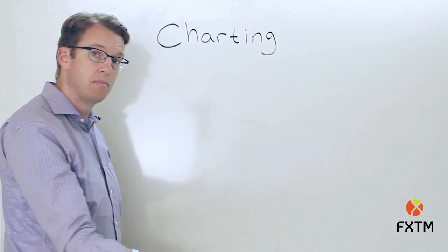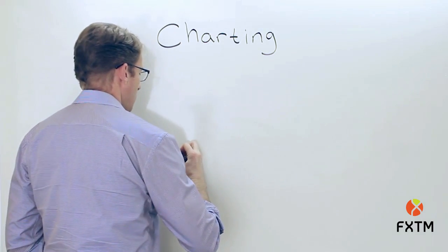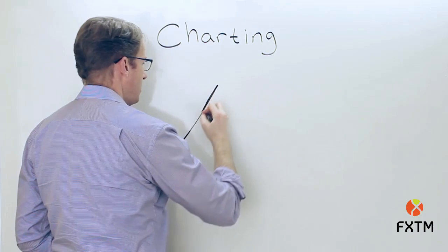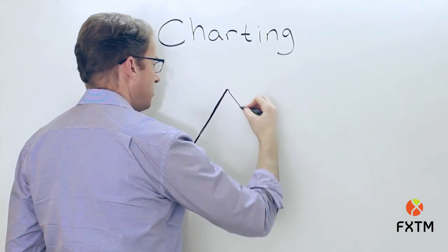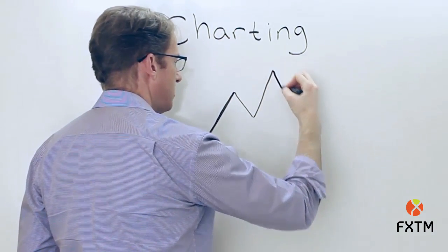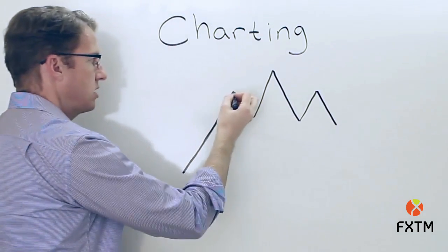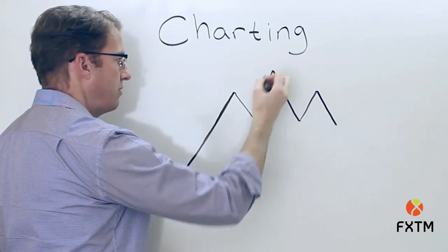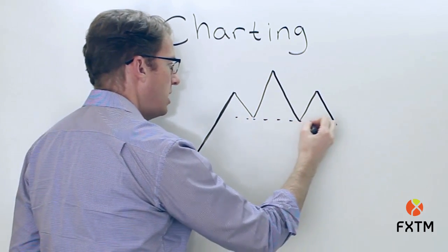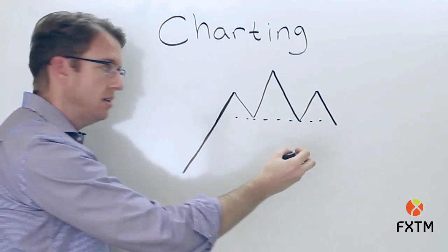The head and shoulders pattern is probably the most common. The pattern is identified by, in this case, a rising market and then we get a series of three peaks, just like this. What this is indicating is we've got a shoulder on the left, shoulder on the right, and we have a head here in the middle. And when it breaks below the neckline, what that's indicating is that the market has run out of steam and that bears are able to take control.